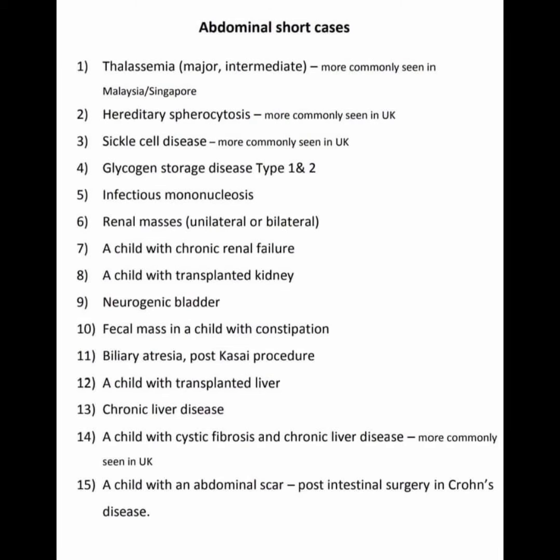On the list of abdominal short cases commonly seen in the exam: 1. Thalassemia major and thalassemia intermediate, more commonly seen in Malaysia and Singapore. 2. Hereditary spherocytosis, more commonly seen in the UK. 3. Sickle cell disease, more commonly seen in the UK. 4. Glycogen storage disease type 1 and type 2.